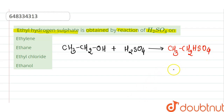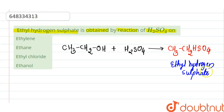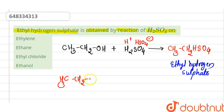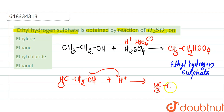So that is the ethyl hydrogen sulfate. Here H⁺ and HSO₄⁻ are formed from H₂SO₄. The first reaction is when CH₃CH₂OH attacks on H⁺ — oxygen has a lone pair, it attacks on H⁺, and formation of CH₃CH₂OH₂⁺ occurs.